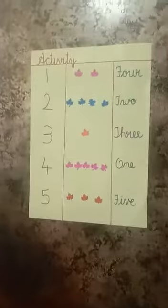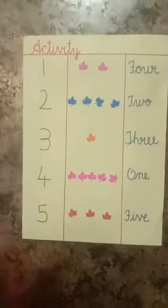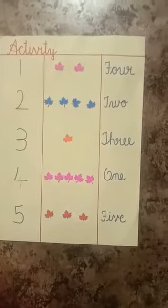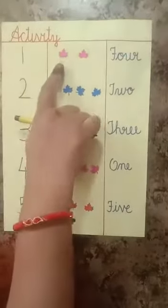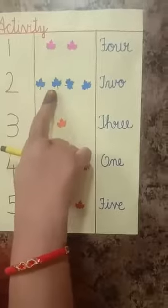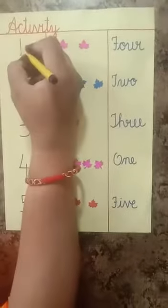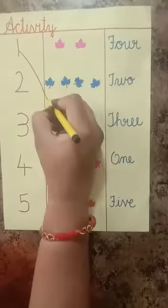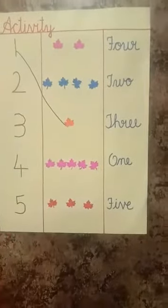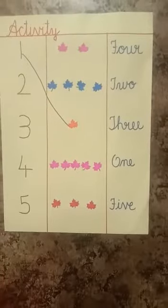Okay children, now let's start the activity. See children, this is an activity in words and number also. See, which number is this? 1. So where is the only one leaf? 1, 2 — no. 1, 2, 3, 4 — no. 1 — yes. This is only one leaf. So you match this one number with this one leaf. Okay?